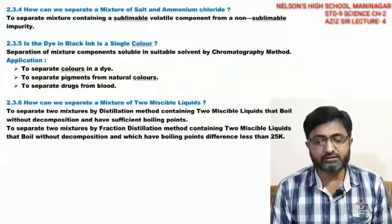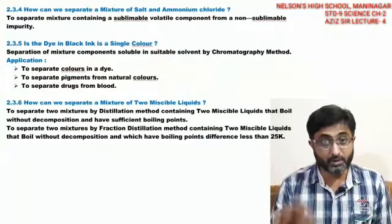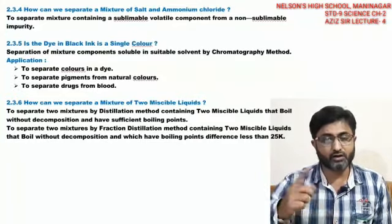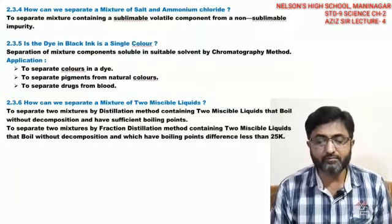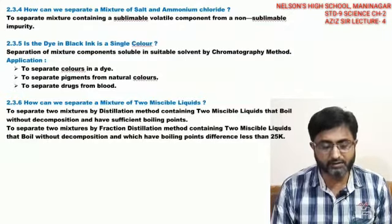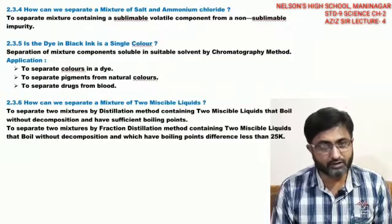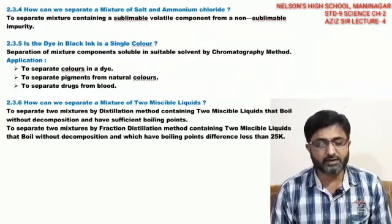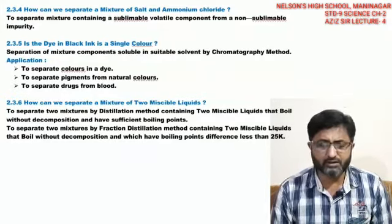So this is how we can separate a volatile sublimable substance — one that directly converts from solid to gas and back from gas to solid. Ammonium chloride here is the sublimable particle and chalk powder is not, so they can be separated. We learn from this that sublimable particles like iodine can also be separated by this method.